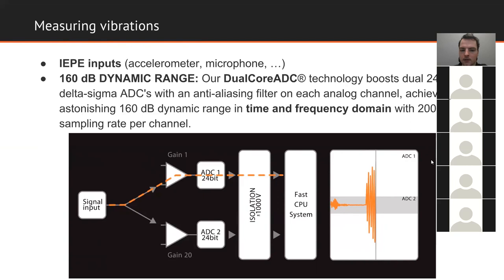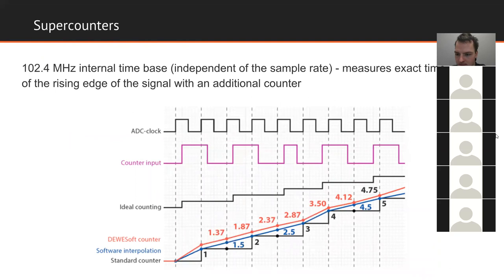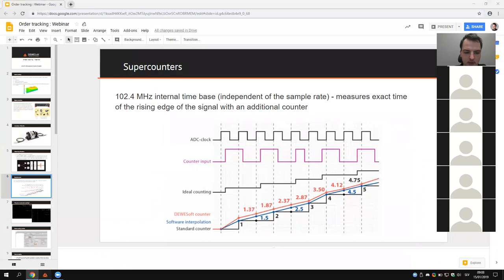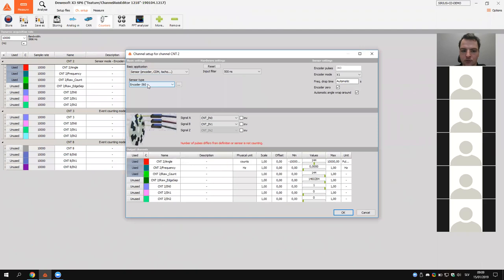We can measure angle very precisely with our super counters. What super counter means is that we have an internal time base of 102.4 MHz, which measures the exact time of the rising edge of the signal with an additional counter. To show this in practice, I have an encoder with 360 pulses per revolution connected to my SIRIUS.